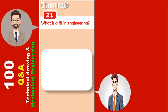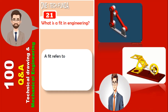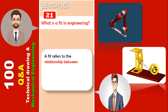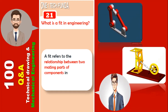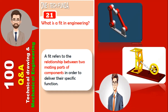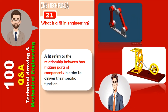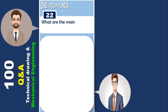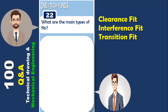What is a fit in engineering? A fit refers to the relationship between two mating parts or components in order to deliver their specific function. The main types of fits are clearance fit, interference fit, and transition fit.